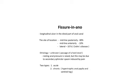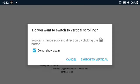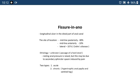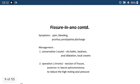It creates a vicious cycle: constipation and passing of hard stools causes an anal ulcer, which causes pain, which causes secondary sphincter spasm, which further increases constipation. There are two types: acute and chronic. Chronic fissure is identified by a hypertrophic anal papilla and a sentinel skin tag. Symptoms are pain, bleeding, pruritus, constipation, and discharge.